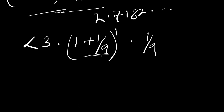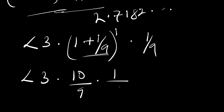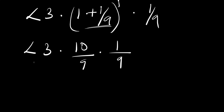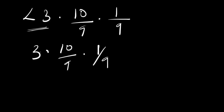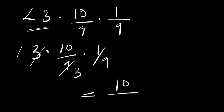We can convert (1 + 1/9) back: multiplying gives 9/9 + 1/9 = 10/9. So we have a number less than 3, times 10/9, times 1/9. Since we are not using a calculator, we use 3 as the upper bound. So we compute 3 times 10/9 times 1/9, which gives 30 divided by 81, simplifying — with 3 in the numerator and 3 times 9 = 27 in the denominator — to 10 divided by 27.